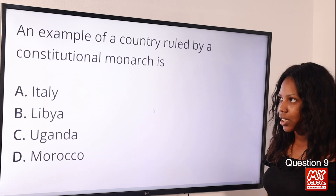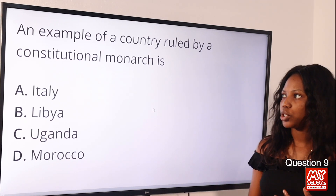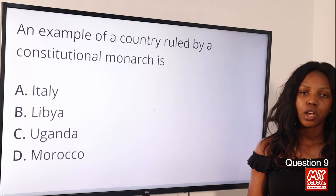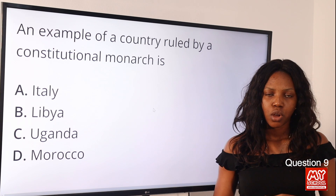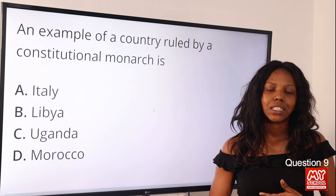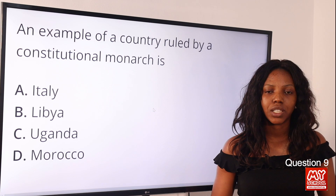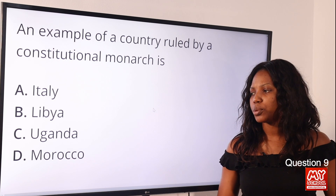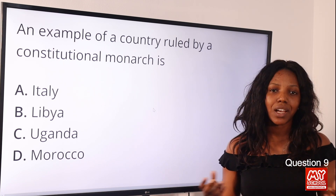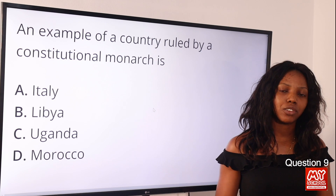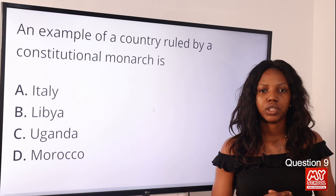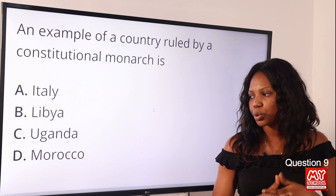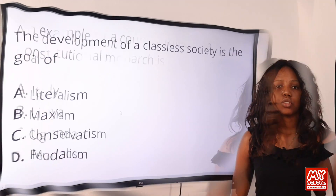Question 9: An example of a country ruled by a constitutional monarch is — option A: Italy; option B: Libya; option C: Uganda; option D: Morocco. The answer is option D, Morocco. Other examples include Kuwait and Jordan. Italy once adopted the absolute monarchy, which was abolished in 1946, so the correct answer is option D, Morocco.